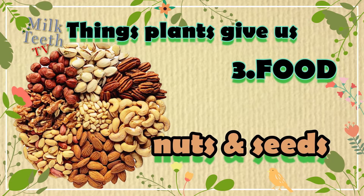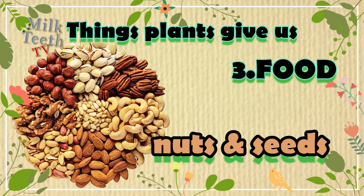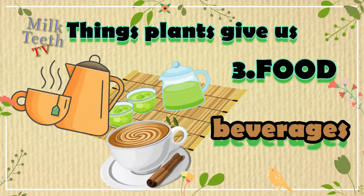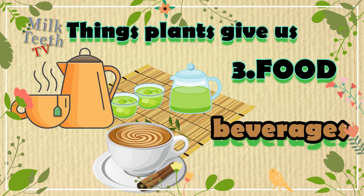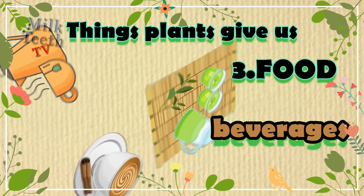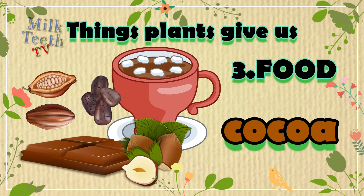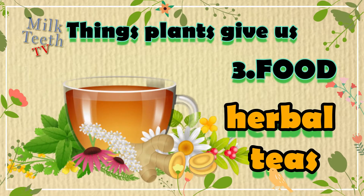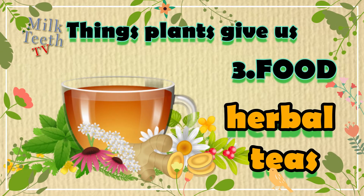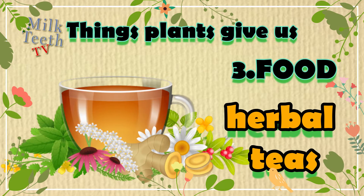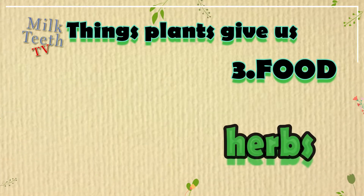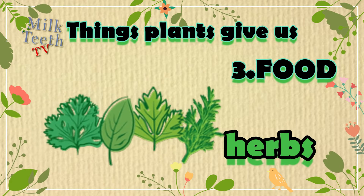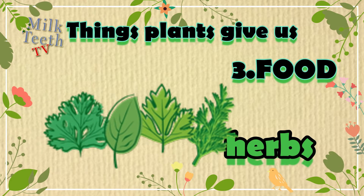We also get nuts and seeds — also known as dry fruits — from plants, like almonds, cashews, and walnuts. Beverages like tea, coffee, and green tea. Cocoa, used to make chocolate. Herbal teas like chamomile tea, tulsi tea, and jasmine tea. Herbs like coriander, mint, parsley, and rosemary — all are given by plants.